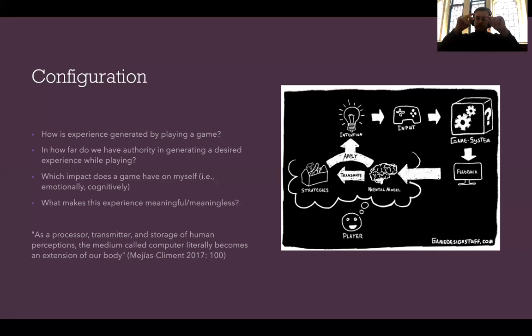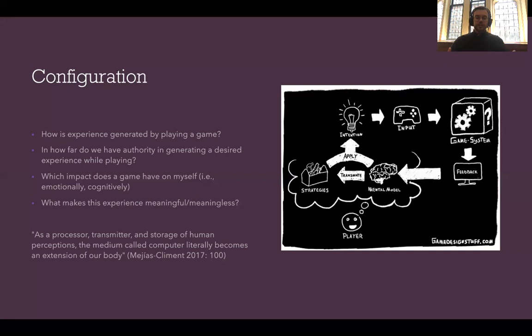A great article is from Mejias Climent from 2017, also in the reading list. The direct quote: 'As a processor, transmitter, and storage of human perceptions, the medium called computer literally becomes an extension of our body.' Playing a game is in a way a cyborg experience — the controller and the video game become not just an extension of our body but also of our mind. Configuration is what happens in the interaction between the game's design and our expectations, interactions, ideas, and thoughts. These two entities — the game's design and our mind — clashing together is configuration.